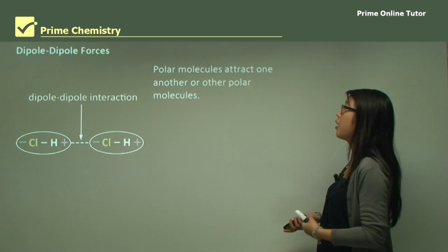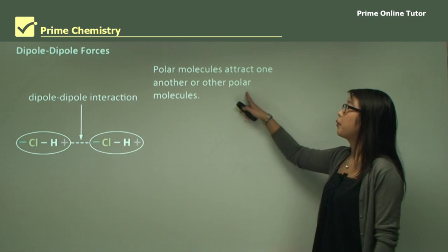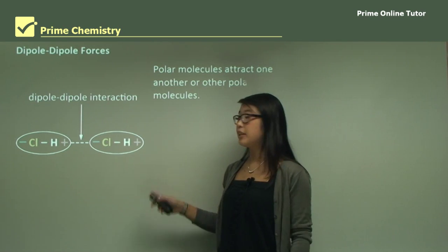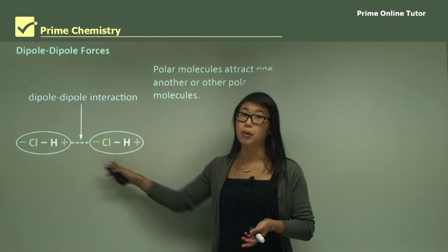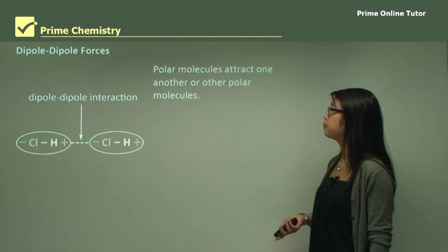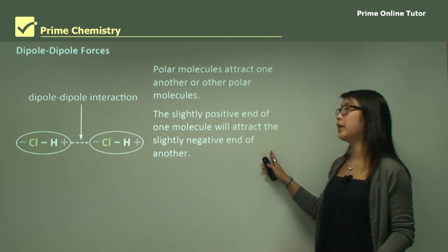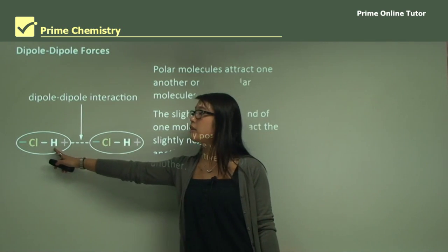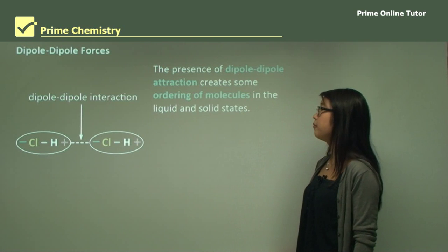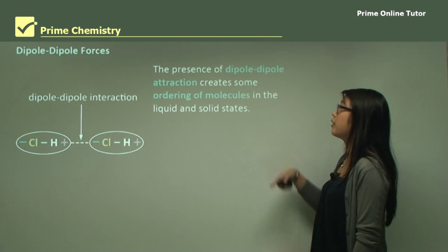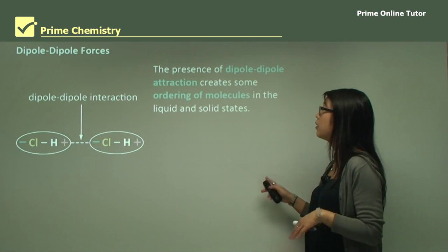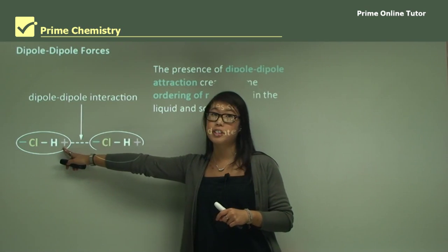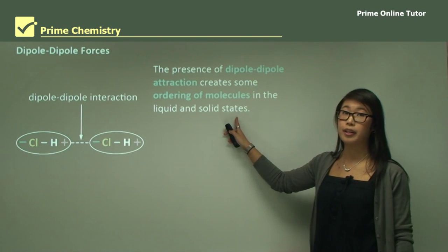In dipole-dipole forces, polar molecules attract each other. We need to make sure there's a polar bond within the molecule, and if there's a larger molecule, is there an overall polarity over the whole molecule? One end is going to be slightly positive and one end slightly negative, and the opposites attract. So the slightly negative Cl side can attract towards the slightly positive hydrogen side. These forces can create ordering in all the molecules, with negatives aligning towards positives in a liquid and solid state.